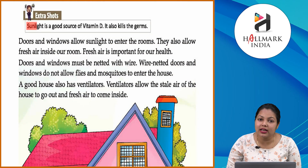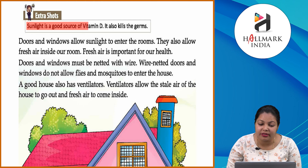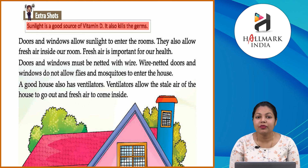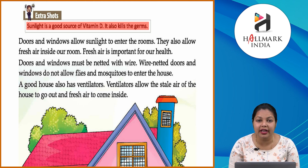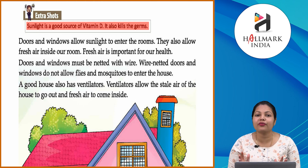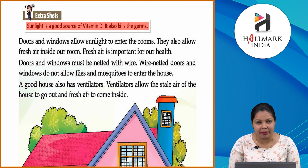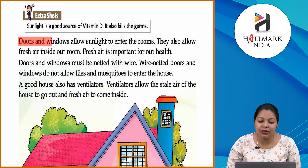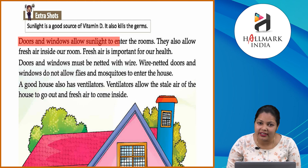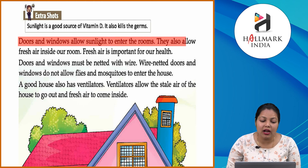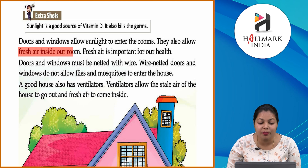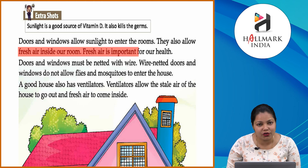Sunlight is a good source of vitamin D; it also kills germs. Sunlight में vitamin D होती है और घर के अंदर अगर कोई germs हैं तो वो उन्हें kill कर देती है। इसलिए घर में proper ventilation और windows होनी चाहिए जिनके through sunlight घर में आ सके। Doors and windows allow sunlight to enter the rooms; they also allow fresh air inside, which is important for our health.